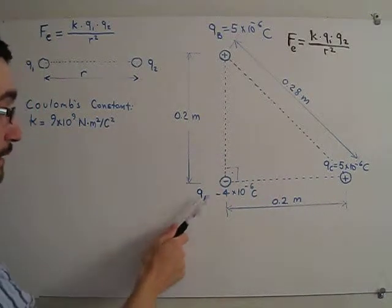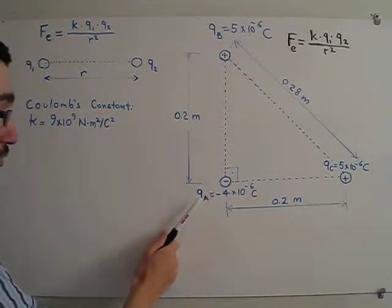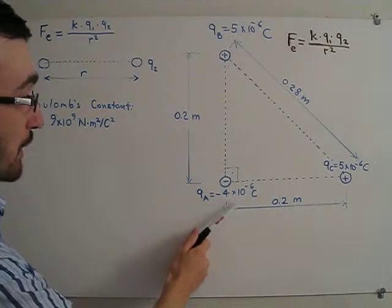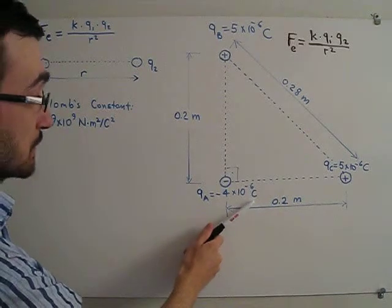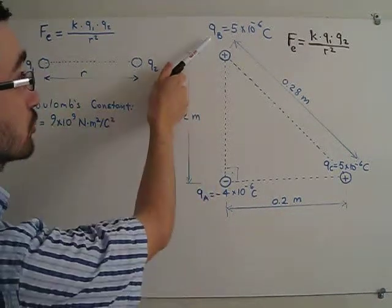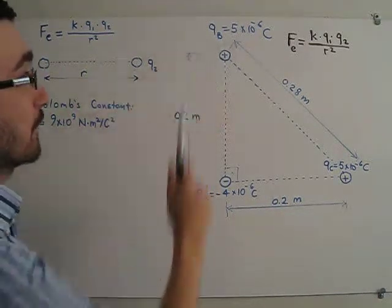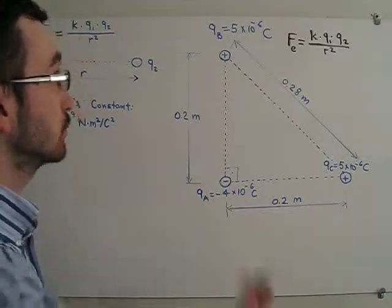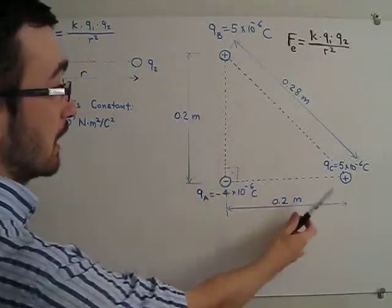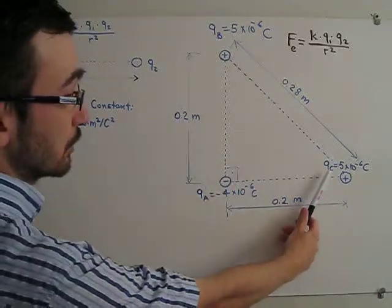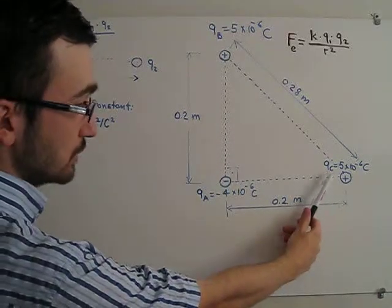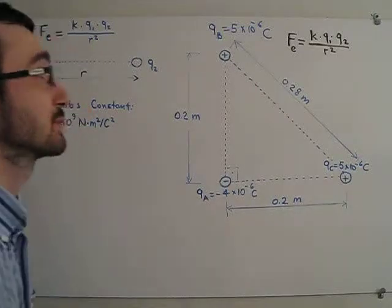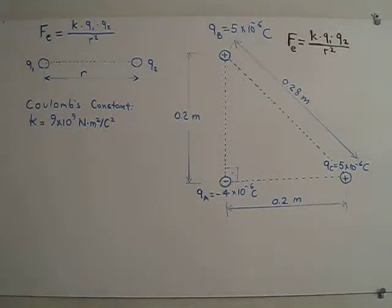Charge QA is minus 4 times 10 to the negative 6 Coulombs, charge QB is 5 times 10 to the negative 6 Coulombs, and QC is the same — 5 times 10 to the negative 6 Coulombs.